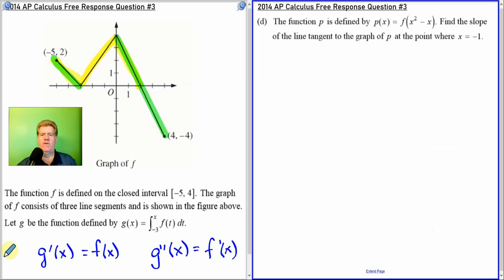And the last one. We have another function, P. P is defined as this function, f(x² - x). Find the slope of the line tangent to the graph of P at the point where x equals negative one. As soon as you see slope, don't worry about tangent line. We're not finding the actual equation of a tangent line. We're just finding the slope. And slope is just a derivative. We're only finding the derivative of P.